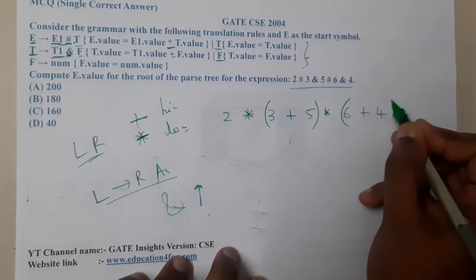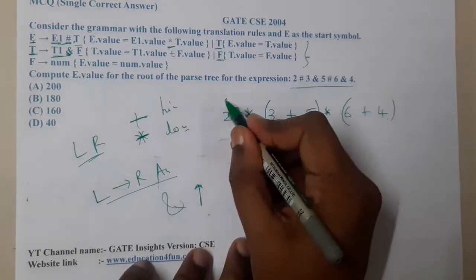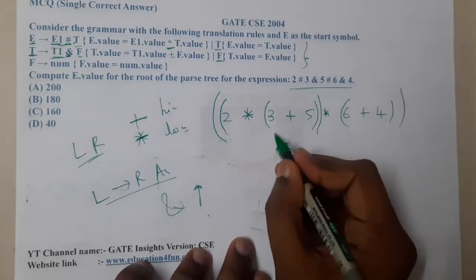Plus and this plus, left to right. Once pluses are done, then you will move on to the multiplication. Then this multiplication, after that the whole multiplication.